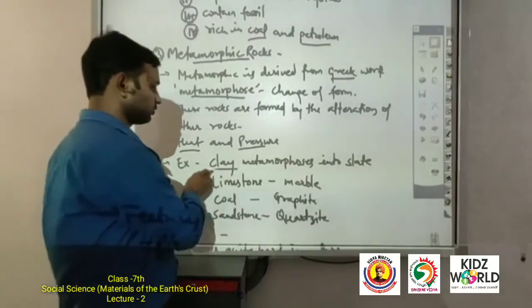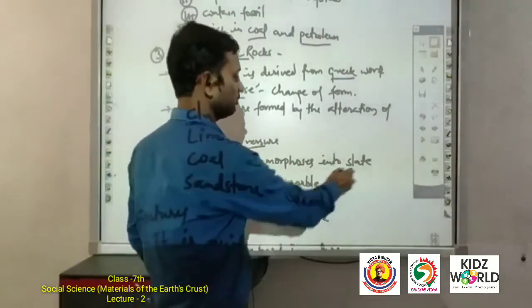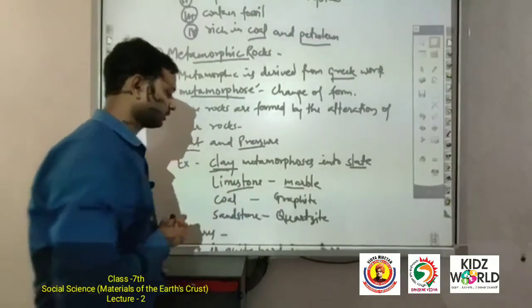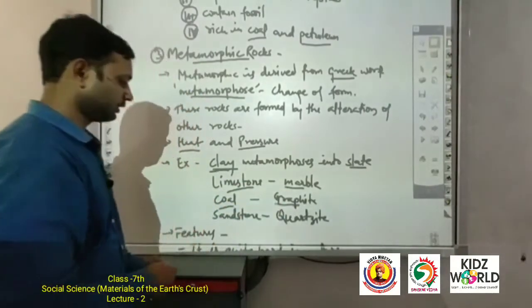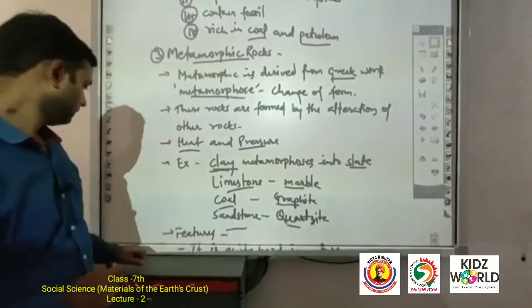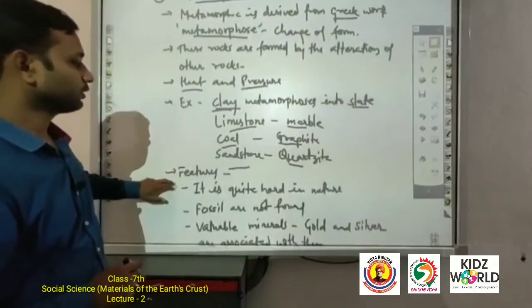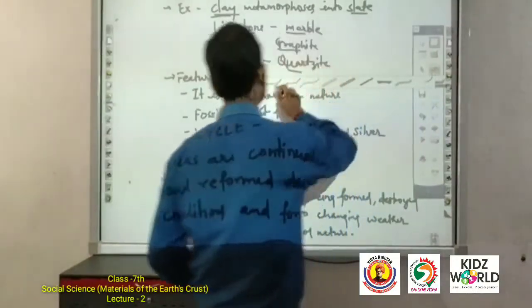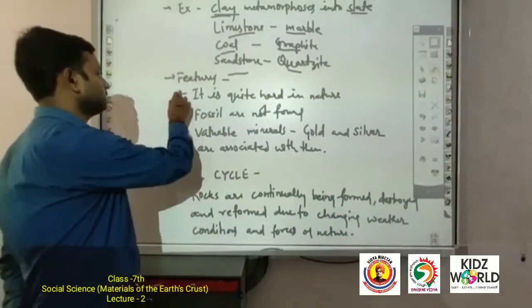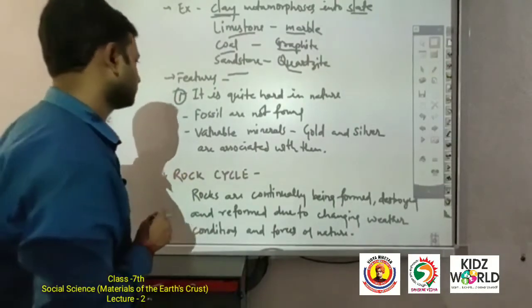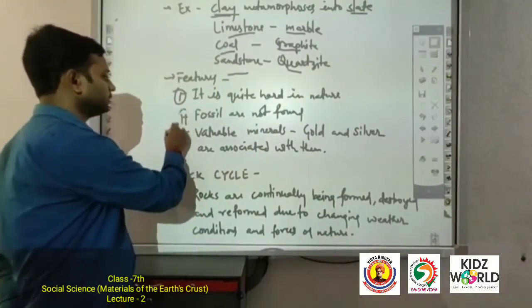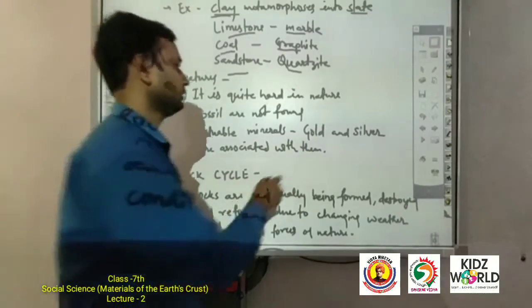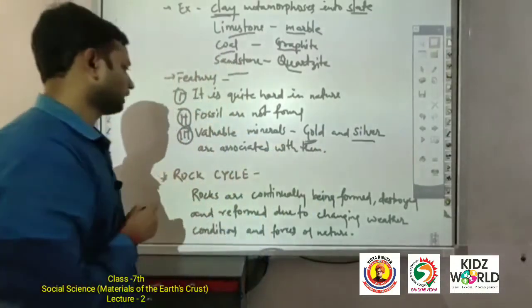For example: clay metamorphoses into slate; limestone changes into marble; coal changes into graphite; sandstone changes into quartzite. The features of metamorphic rocks: they are quite hard in nature; fossils are not found in them; and valuable minerals such as gold and silver are associated with them.